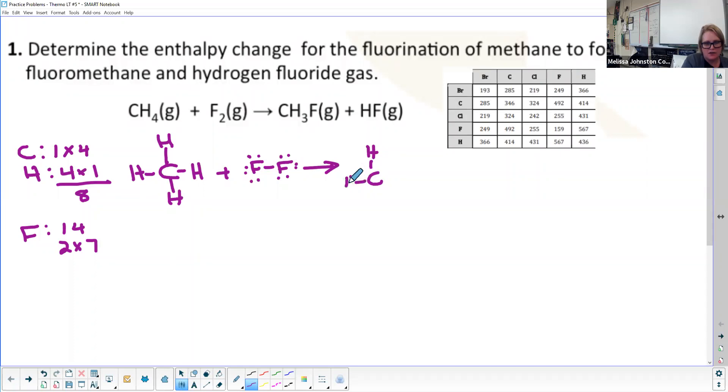So I've got CH3F, and just as a reminder of a Lewis structure, I'm putting valence electrons there, and I've got HF here like that.